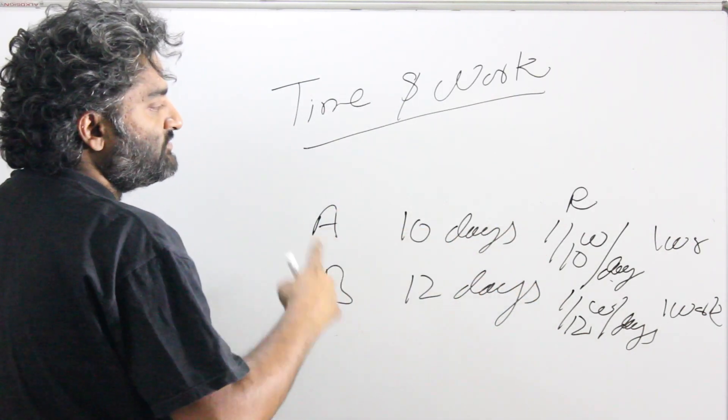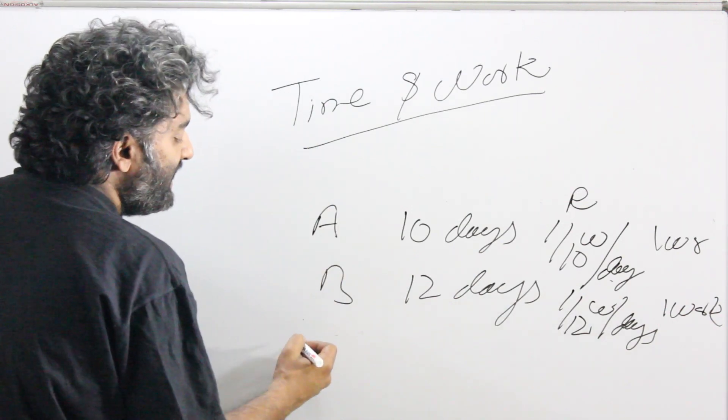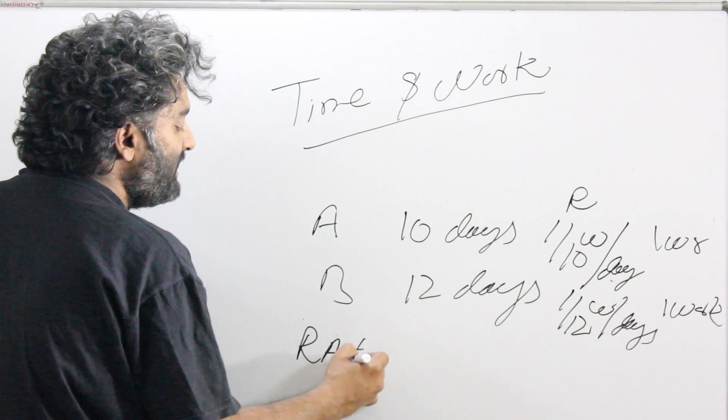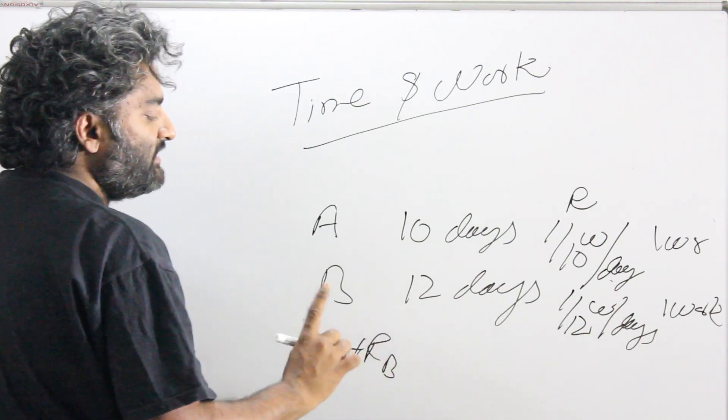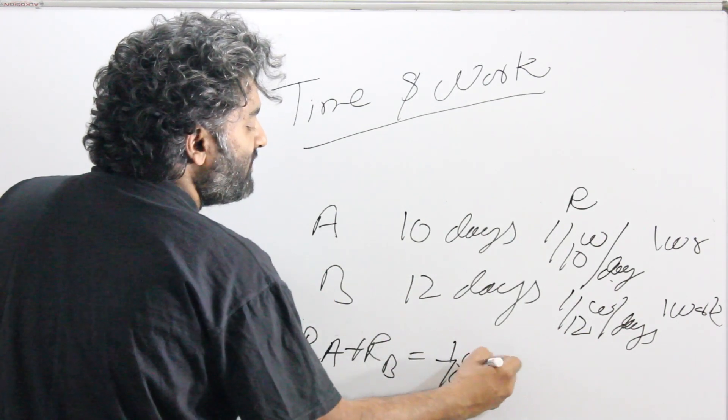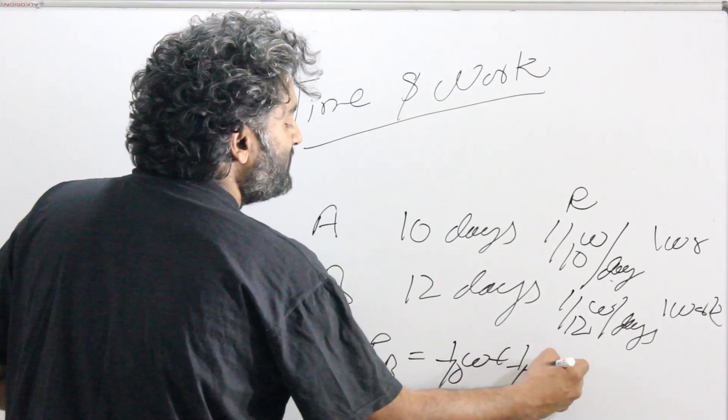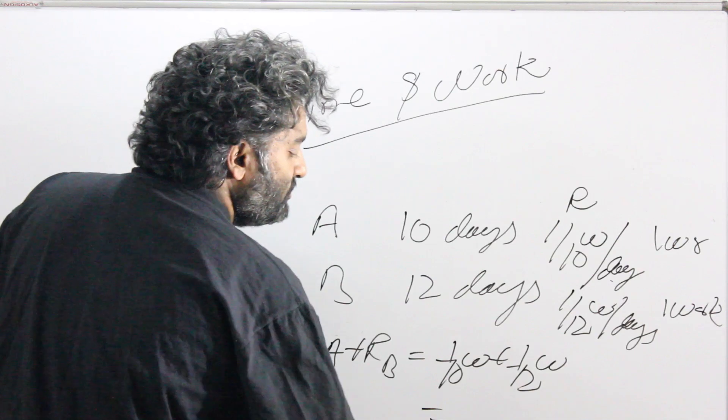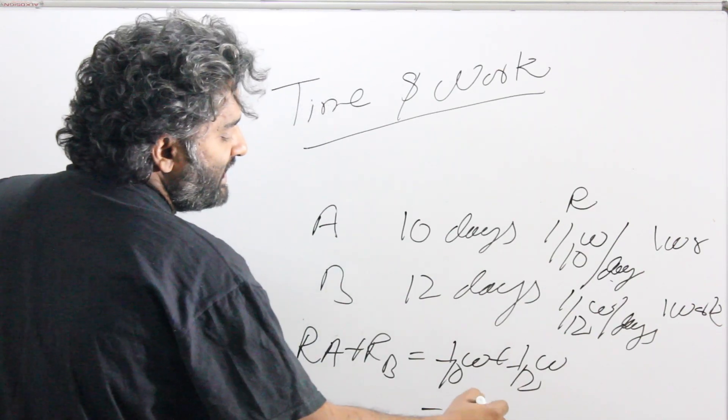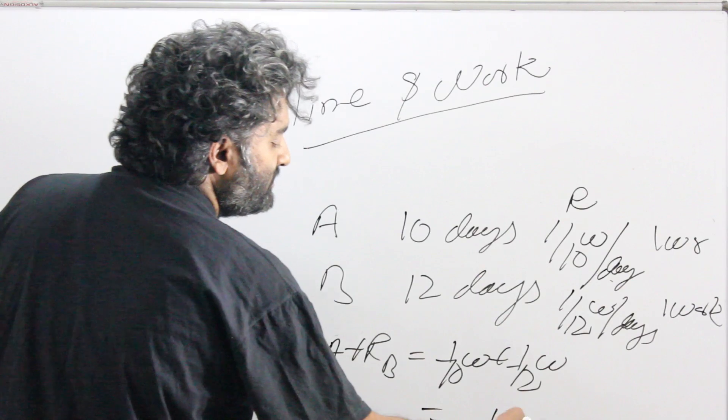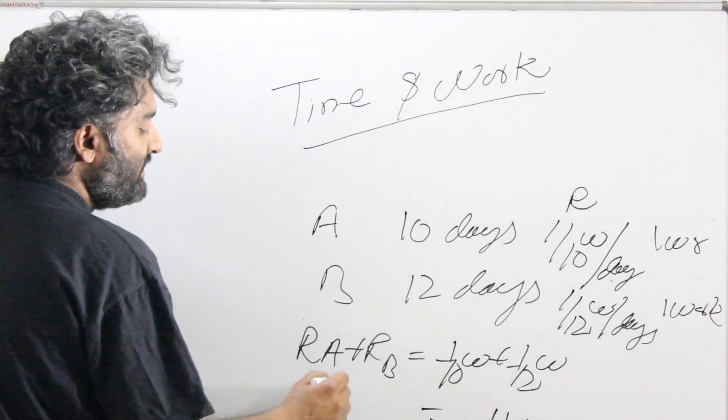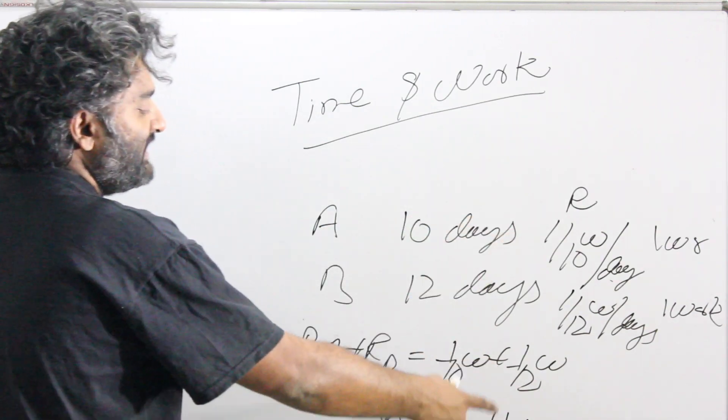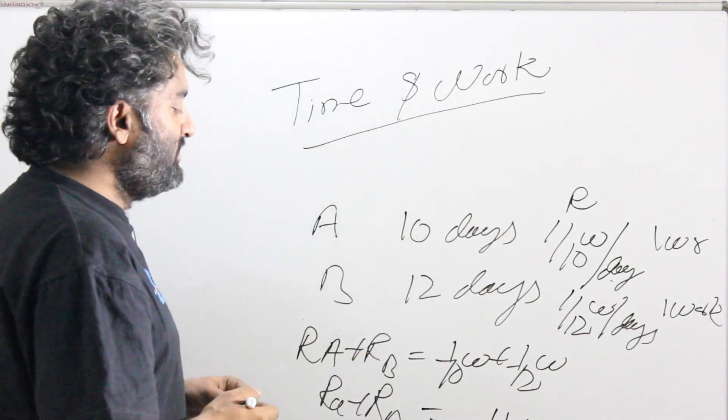A and B are working together. If we are thinking of one day, A and B working together, how much will they get done? It will be rate of A plus rate of B in one day. So it will be 1 by 10 of W plus 1 by 12 of W. You work this out. You get 60 as a denominator and 11 as a numerator. In one day, the combined rate of A and B is 11 by 60 of the work.